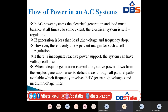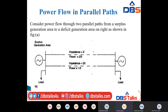When adequate generation is available, active power flows from the surplus generation areas to deficit areas — that is, from source to load — through all parallel paths available, involving EHV and medium voltage lines. This is the flow of power in an AC system. Next, we consider power flow in parallel paths.